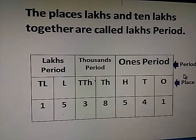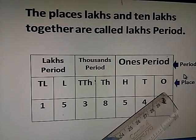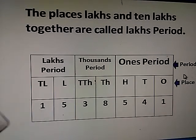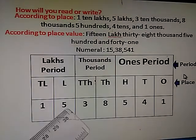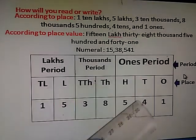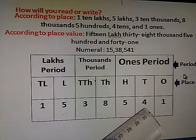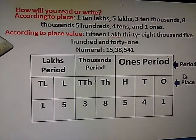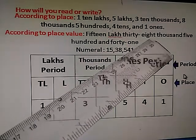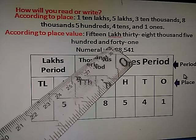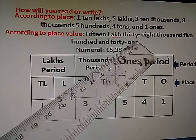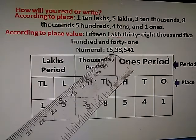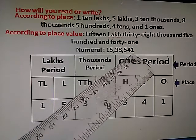Now, the places lakhs and ten lakhs together are called the lakh period. Look at this chart: ones, tens, hundreds, thousands, ten thousands, lakhs, and ten lakhs. According to place value, in the ten lakhs place is 1, then five lakhs, three ten-thousands, eight thousands, five hundreds, four tens, and one ones. That gives us fifteen lakhs, thirty-eight thousand, five hundred and forty-one. Numeral: fifteen lakhs, thirty-eight thousand, five hundred and forty-one. The periods are separated by commas — ones period, thousands period, and lakhs period.